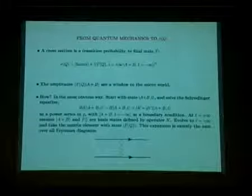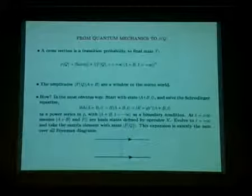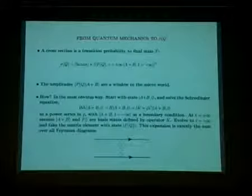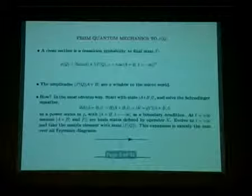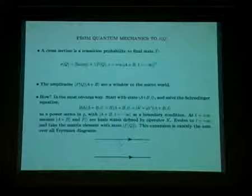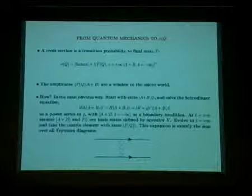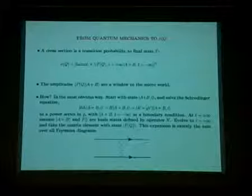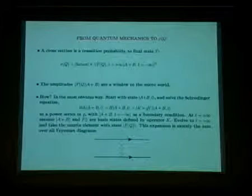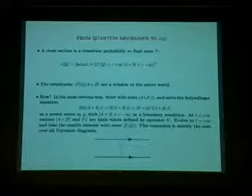The way that we solve it is by starting with the idea that these states A plus B, far in the past, and F far in the future, are basis states defined by the free operator K. Then we can solve for this time dependence by an expansion in the potential term, which I'm labeling GV. We have G times V as this extra potential which is going to mix the states for us. What we're doing when we make predictions in this particular approach is we're simply solving the Schrodinger equation.